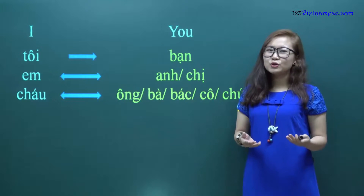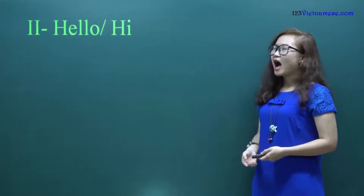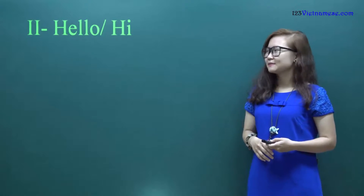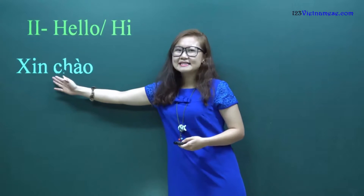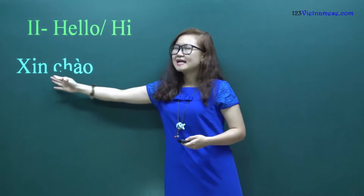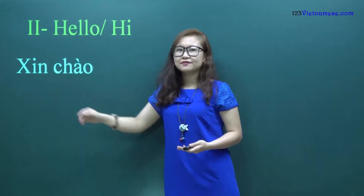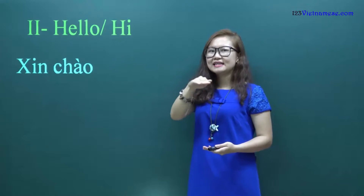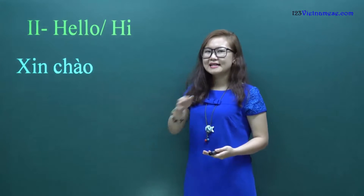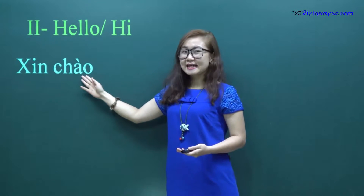Now we will move on to the second part of our lesson today: how to say hello. Hello in Vietnamese means 'Xin chào.' The first word 'xin' is flat tone, and the second word 'chào' is low falling tone. Xin chào. We have another way to say hello: you say 'chào' and then choose the suitable second personal pronoun.